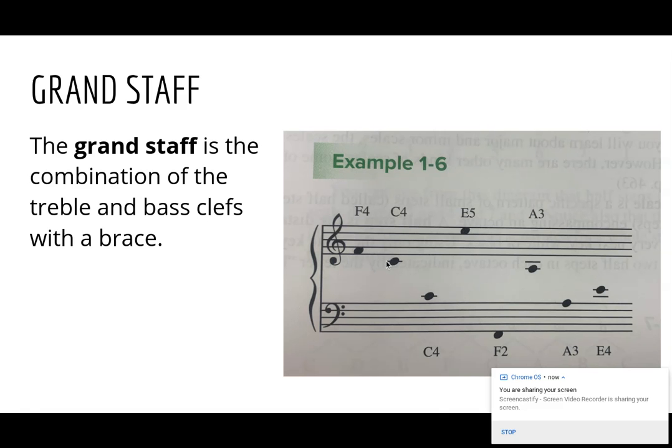So F4 in our treble clef is just what you expect. When you get to C4, they had to draw a ledger line because there is not a line there for that note. Well, if you look down at the bass clef, you'll see the same thing. One ledger line above the clef. That's actually the same note.